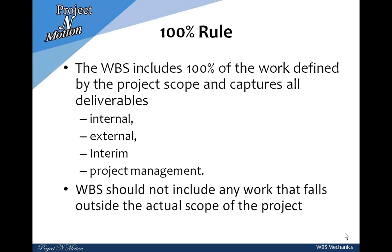While designing the WBS, one rule is very important to follow: the 100% rule. The 100% rule defines that WBS should have all the deliverables defined in the project scope. It is important to understand that we are talking about deliverables, and the sources of these deliverables may be different, such as internal, external, interim, and project management. These categories include all possible sources, and therefore WBS will hold all possible deliverables of the project, leading to a complete scope.